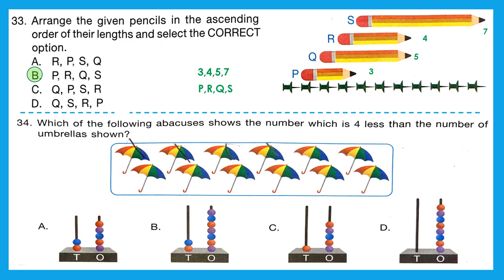Question 34: 'Which abacus shows the number that is 4 less than the number of umbrellas shown?' Counting umbrellas: 1 through 12 — total 12 umbrellas. Taking away 4 gives 8. So we need an abacus showing 8 ones and 0 tens. Options A, B, and C show tens place values — not correct. The right option is D, which represents 0 tens and 8 ones.